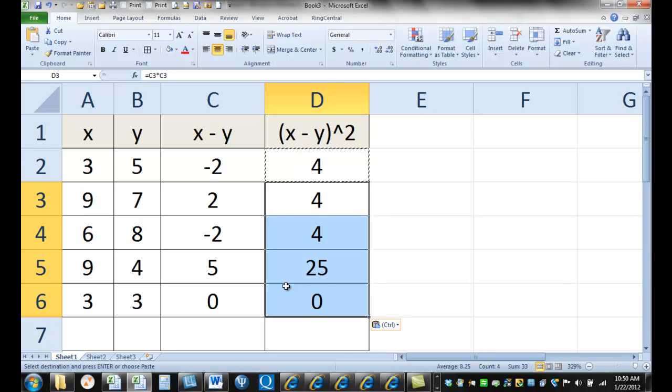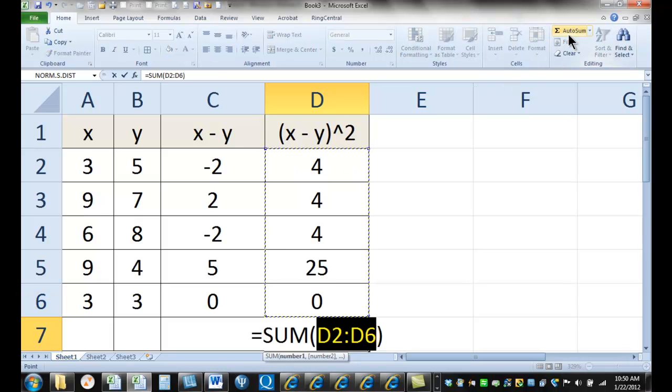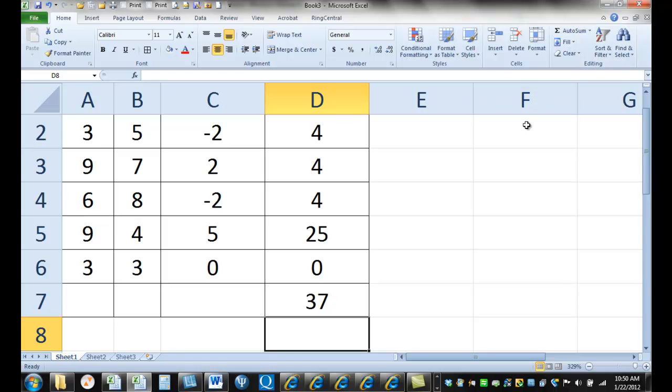Okay, so the deviation values are here. The square deviations are here. And we want to find the sum of the square deviations. So we'll just sum up those. We'll get 37.